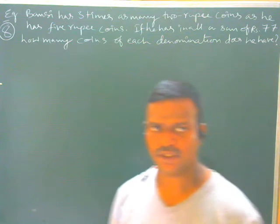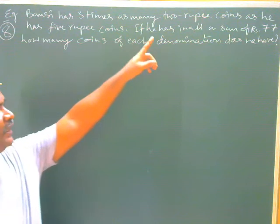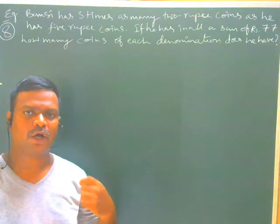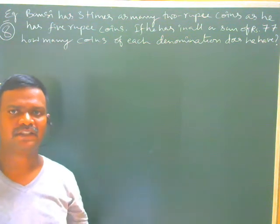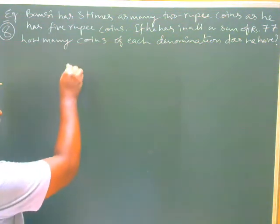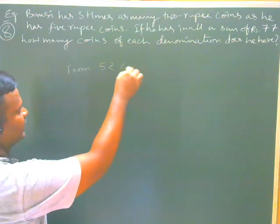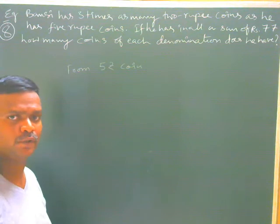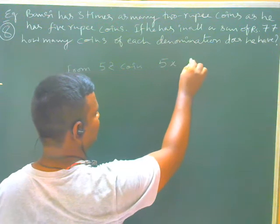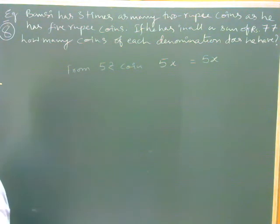In this question, you can observe that Bansi has 3 times as many 2-rupee coins, meaning he has 3 times more 2-rupee coins than 5-rupee coins. We will start from 5-rupee coins. I am considering 5 rupees into X — that means 5X — so there are X number of 5-rupee coins.